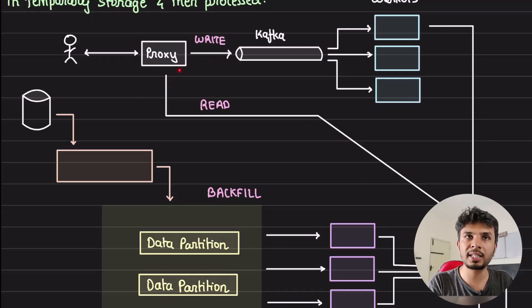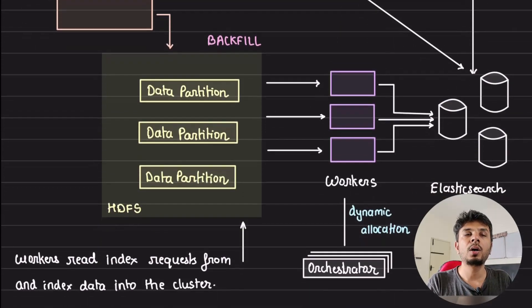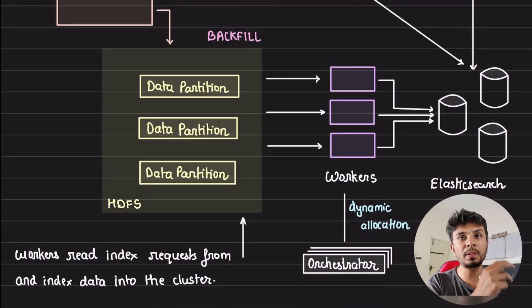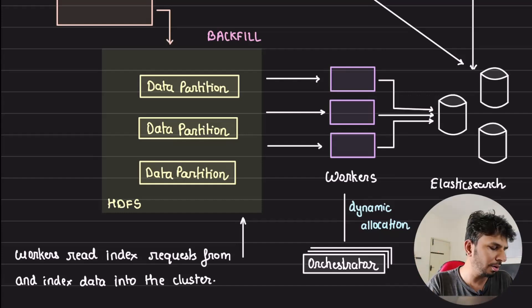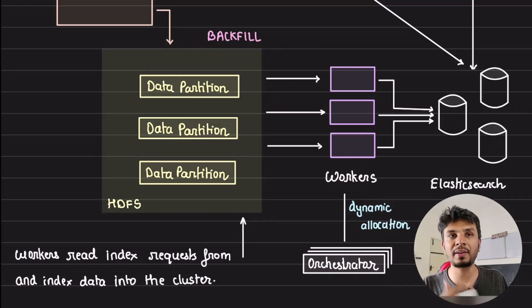So just to give you a gist: read happens synchronously to Elasticsearch via this proxy. The write through this proxy goes through Kafka, consumed by workers, put into Elasticsearch. While the backfill - the job, the MapReduce job that used to directly write it to Elasticsearch - now flushes it into HDFS which is consumed by workers spun dynamically using orchestrator and put into Elasticsearch. This is such a beautiful piece of learning where we see how writes which are deferred makes your system handle scale while reads happen synchronously. There is no other way to do so.